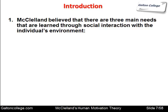McClellan believed that there are three main needs that are learned through social interaction with the individual's environment. We know that personality can be derived from nature or from nurture according to psychology. If it's nature, it's part of our genetic makeup. If it's nurture, it's from our environment — what we learn and how we've been taught and influenced. According to McClellan's view, the three main needs that drive motivation come from social interaction, with the person's environment generating these needs.